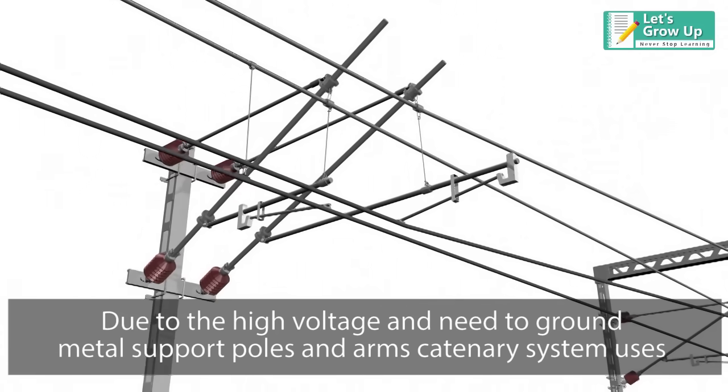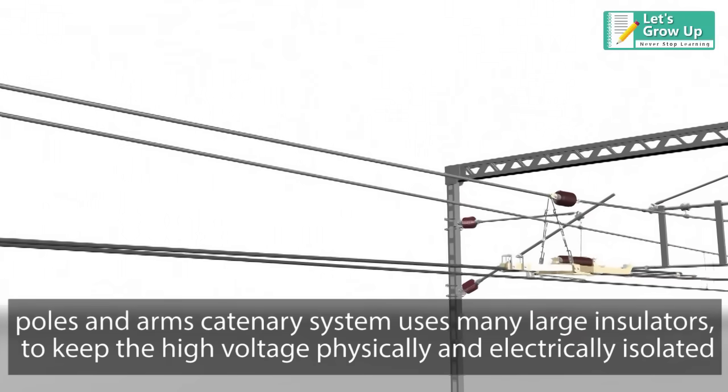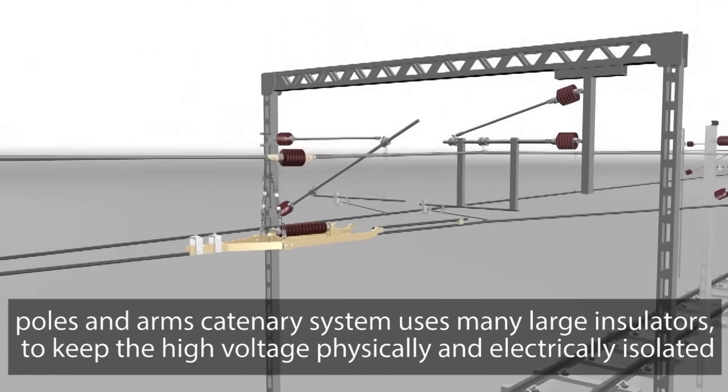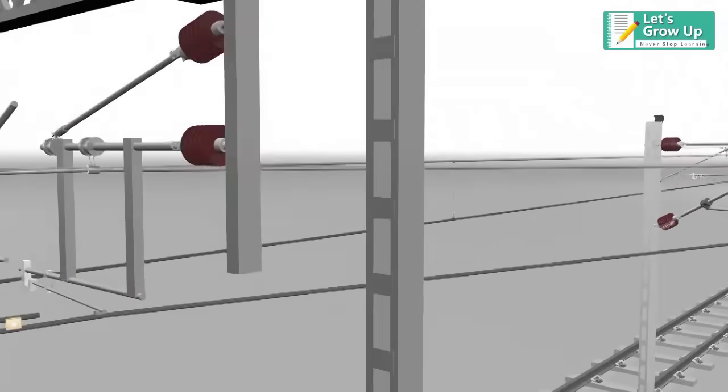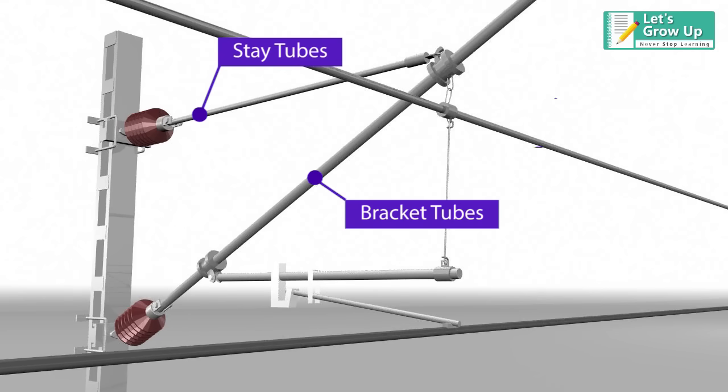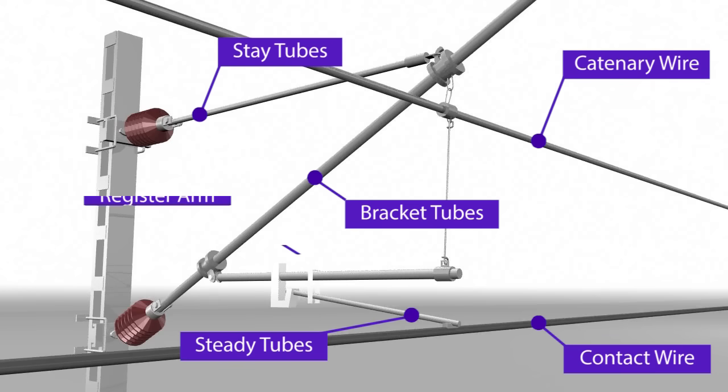Due to the high voltage and need to ground metal support poles and arms, the catenary system uses many large insulators to keep the high voltage physically and electrically isolated. Let's familiarize with some components: bracket tubes, stay tubes, catenary wire, contact wire, steady tube, register arm, and dropper.